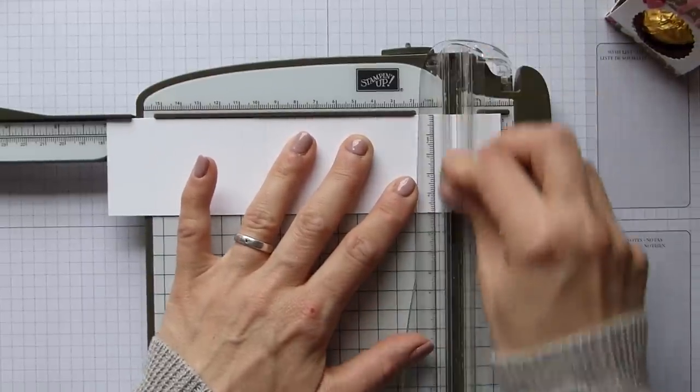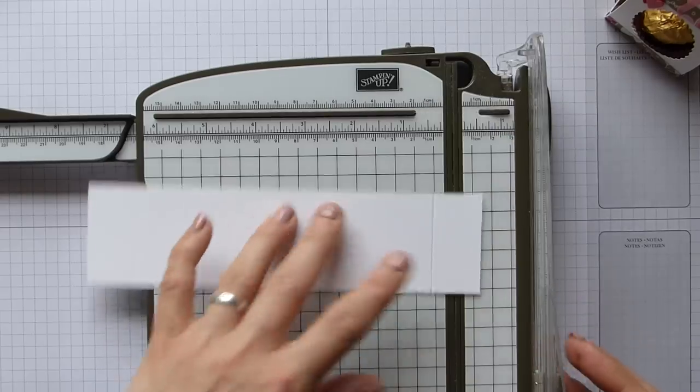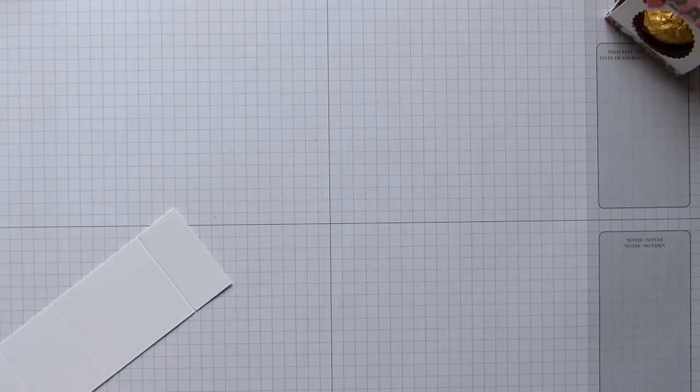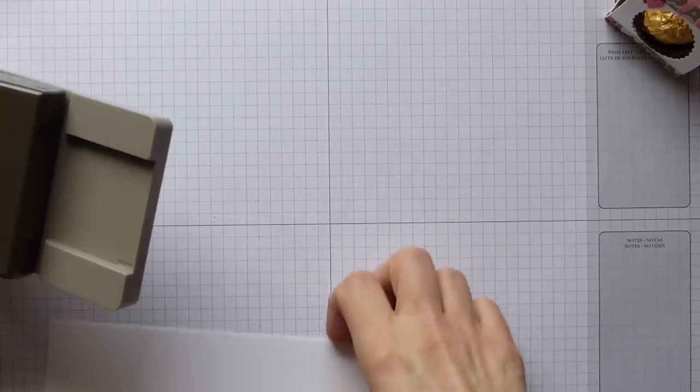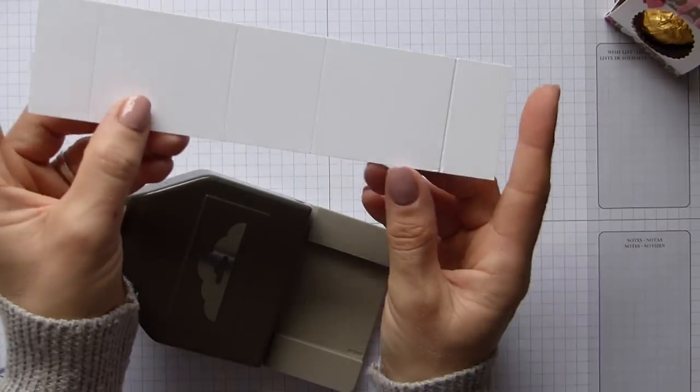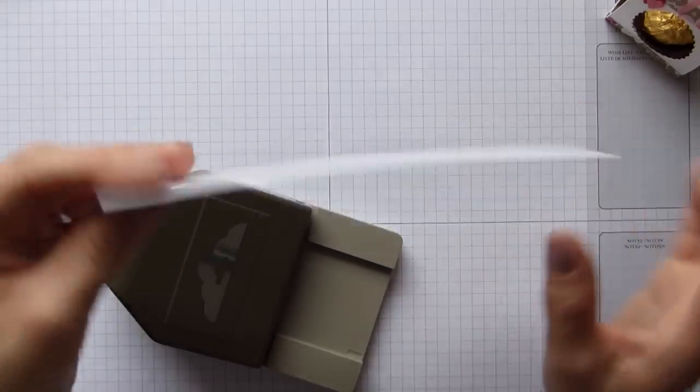That's gone a little bit wonky there. Oh my goodness. That's not so good, is it? Okay. So once we've done that bit, we then need to bring in our scalloped tag topper punch, which I think is lovely. And on both ends, we're literally going to punch. However,